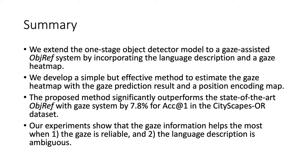In summary, we make the following key contributions. We extend the one-stage object detector model to a gaze-assisted object referring system by incorporating the language description and a gaze heat map. We develop a simple but effective method to estimate the gaze heat map with the gaze prediction result and a position encoding map. The proposed method significantly outperforms the state-of-the-art object referring with gaze system by 7.8% for accuracy at 1 in the Cityscapes-OR dataset. Our experiments show that the gaze information helps the most when the gaze is reliable and the language description is ambiguous. Thank you for your listening.